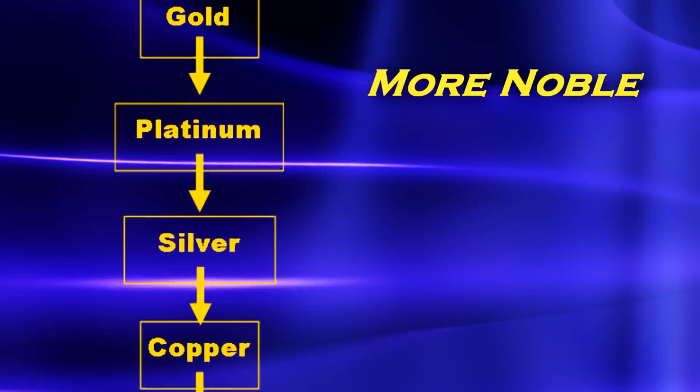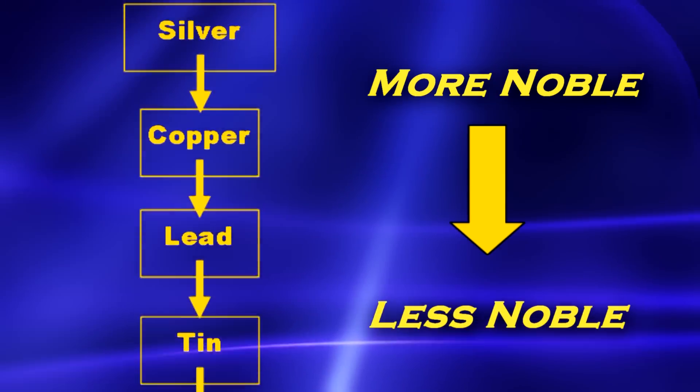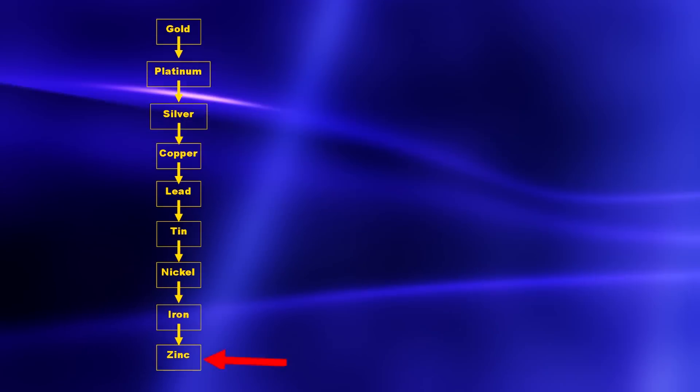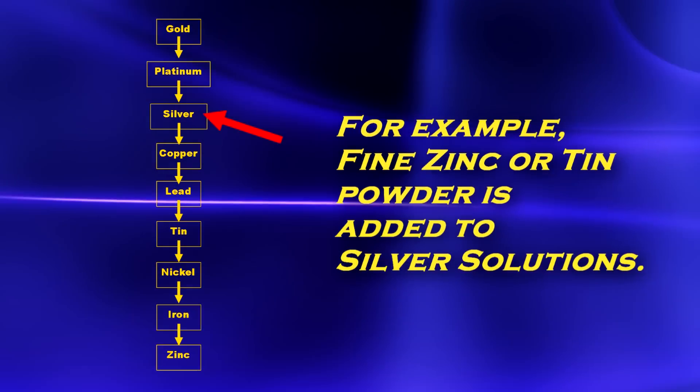The more noble metals will take electrons from less noble metals in reactions. The sacrificial metals are mixed into the solution in fine powder form to increase surface area and reaction rates.